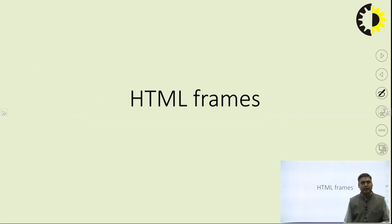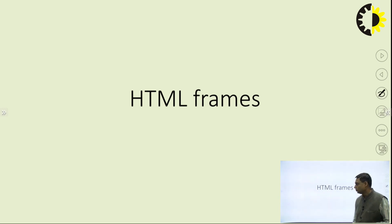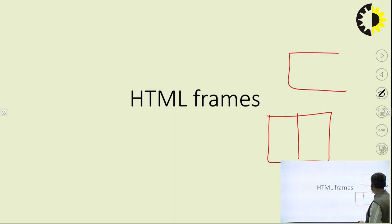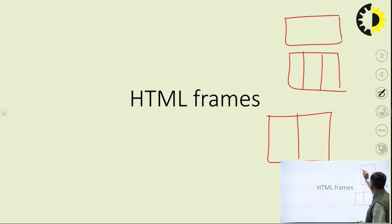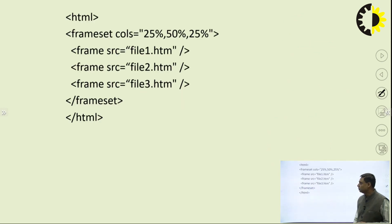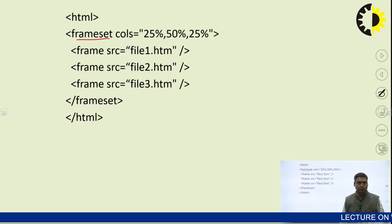Next, I am going to discuss HTML frames. HTML frames are basically used to divide a browser window into two or more parts, either row-wise or column-wise, or further subdivided. Two important tags for HTML frames are: frameset, which defines the number of divisions — either column-wise or row-wise. This example shows a column-wise division with three sections.